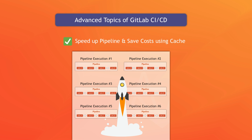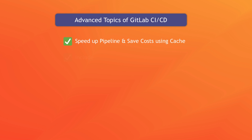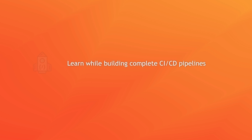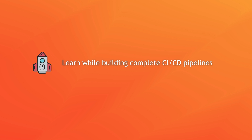After that, we will move on to more advanced topics and learn how to speed up the pipeline using cache, how to use the include feature and use GitLab's job templates in your pipeline, and how to extract common pipeline code and build a job hierarchy with the extends feature to make your pipeline configuration more maintainable. And you will learn all this while building complete CI/CD pipelines for demo applications.